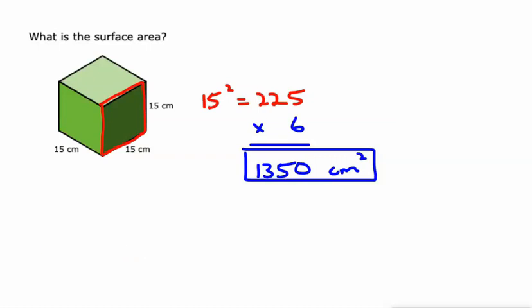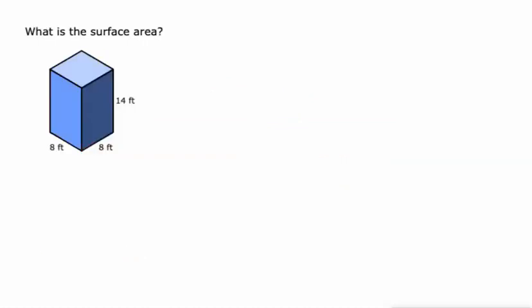This one, though, we are going to use that formula. We're going to do surface area equals 2 times the area of the base plus the perimeter of the base times the height of the prism. Let's take this step by step.